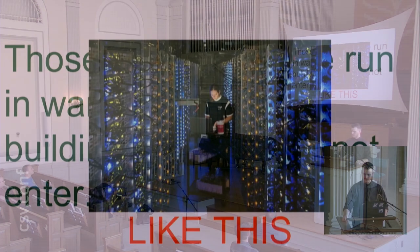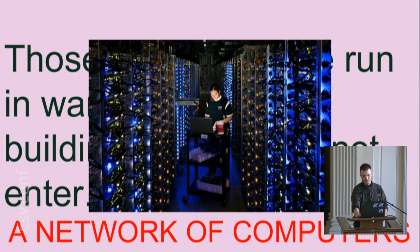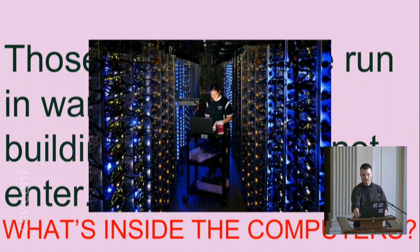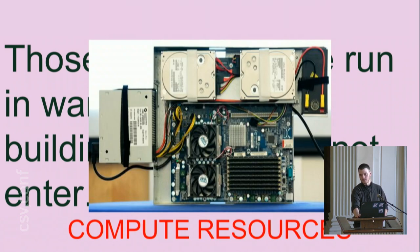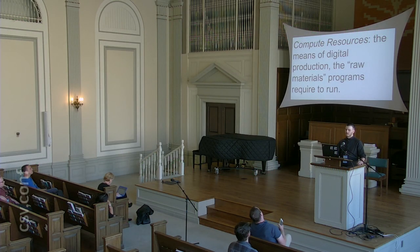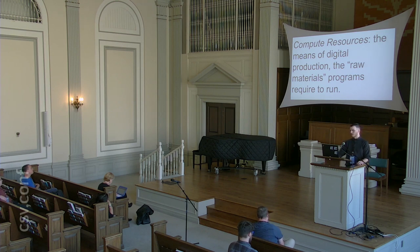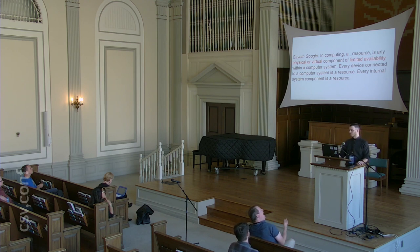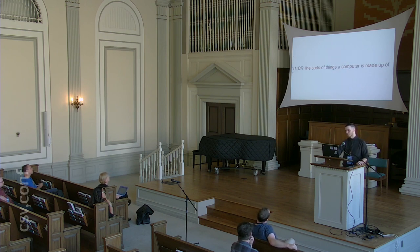What does it look like inside? It looks like this — that's a network of computers. Here's a picture from above; this is one in Iowa. What's inside the computers? Compute resources. A nice non-technical definition is that compute resources are the means of digital production — the raw materials that programs require to run. Google defines compute resources as any physical or virtual component of limited availability within a computer system. Every device is a resource, every internal system component is a resource.